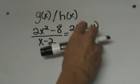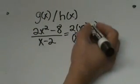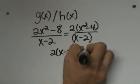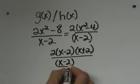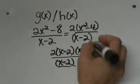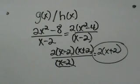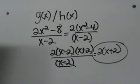x squared minus 4 is a binomial and x minus 2 is a binomial, so we can't cancel yet. But x squared minus 4 also factors again — that is the difference of two squares — so we factor into x minus 2 times x plus 2, all over x minus 2. We have an x minus 2 in both numerator and denominator, so those cancel. We are left with 2 times x plus 2, and that is the simplified form — the result of dividing those two functions.